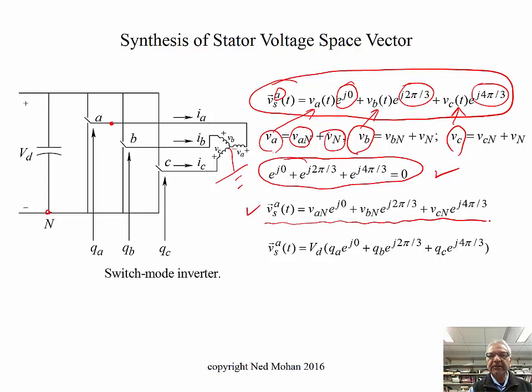And what are the pole voltages? Well, that's the DC bus voltage times the switching signal Q sub A, which takes on two values. It's one when the switch is up, and it's zero when it's down. So if you do that, then we can also write the space voltage vector in terms of this DC input times these switching signals here.